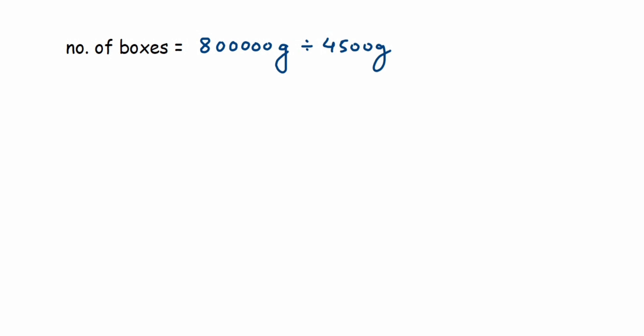We are going to divide this. I am not going to do the cancellation method because I have to check how many fits here. 4500 will be the divisor and 800,000 will be the dividend. Now first we are going to take the first four digits, which is 8000.